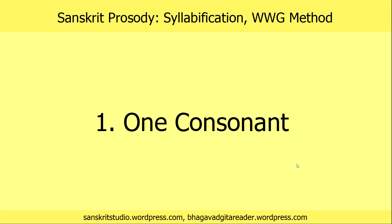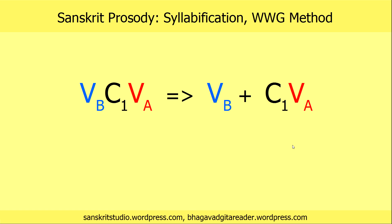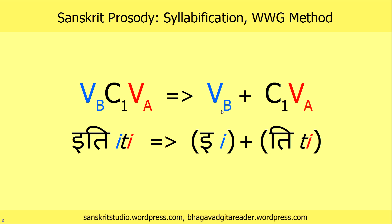Here we have the main situation 1: only one consonant in between the vowels. In this case it is very simple — c1, consonant 1, always goes to the red vowel A, and the blue vowel B stands alone. So in the case of 'iti', where we have the 't' sound as consonant 1, we will produce a syllable ending in 't', and another syllable focusing on the blue vowel with no consonants in it.